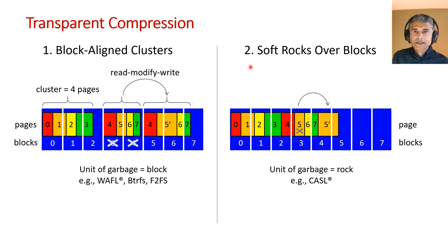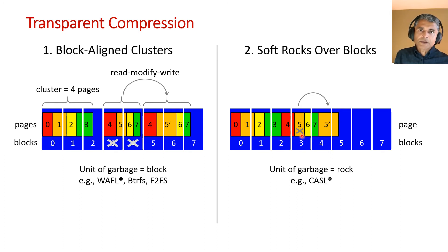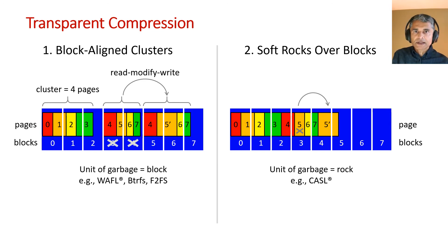The second technique can be seen as implementing a rocks-like abstraction on top of block storage. The file system does need to be more sophisticated — for example, it now needs to collect garbage in units of rocks. But now, if the application updates a page, the file system can rewrite just that page. So these software-level rocks, or soft rocks, can store data efficiently, but they are still not as good as device-level rocks.